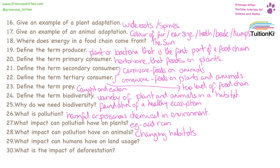Humans generally dictate land usage — for example, we chop down large swathes of rainforest to put fields in. Deforestation can have a devastating impact on the land. The roots from the trees generally keep the soil in place. If the trees aren't there to keep the soil in place, the soil will generally wash away, leaving the earth barren.